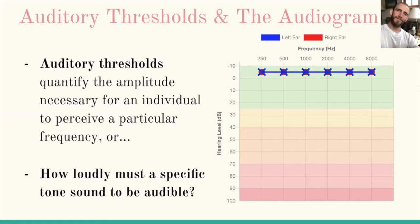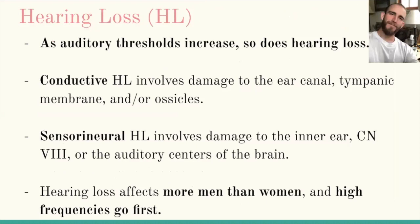Audiograms are a standardized way to display auditory thresholds across a range of frequencies. It's like an upside-down graph. The x-axis on top shows frequencies increasing from left to right, and the y-axis on the left shows amplitude increasing from top to bottom. The colors represent levels of hearing loss. So, higher pure tone thresholds mean more hearing loss.